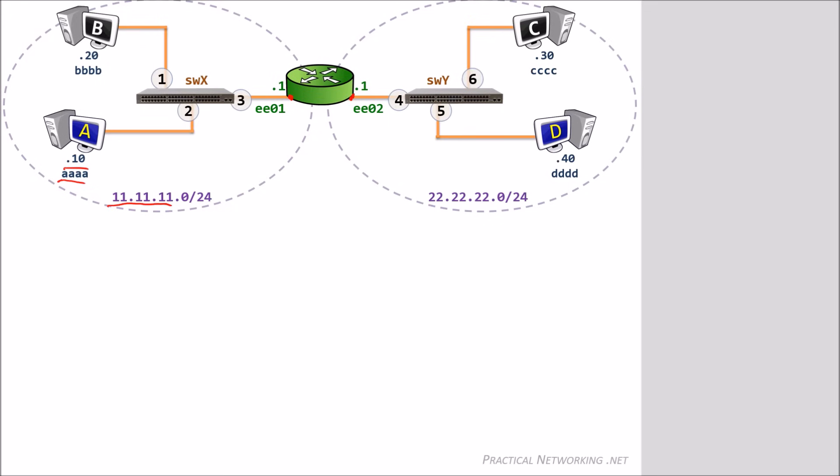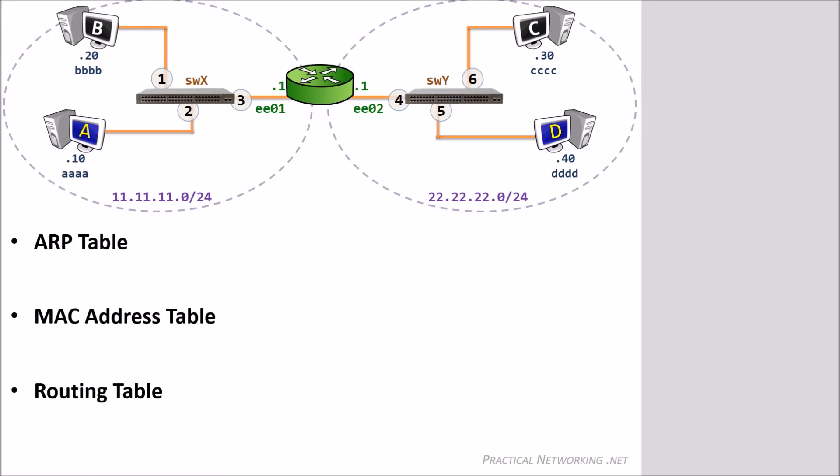Each port on the switch will also be uniquely labeled. SwitchX will have ports 1, 2, and 3, and SwitchY will have ports 4, 5, and 6. To demonstrate how hosts, switches, and routers process traffic, we'll be looking at three different tables that these devices maintain: an ARP table, a MAC address table, and a routing table.